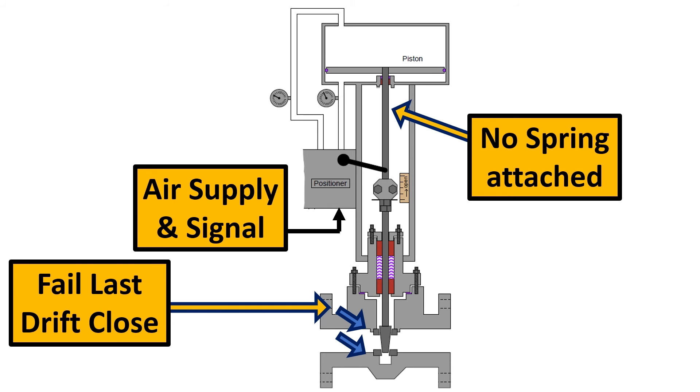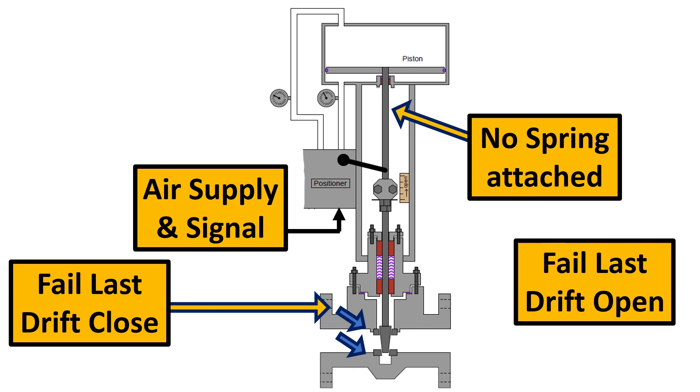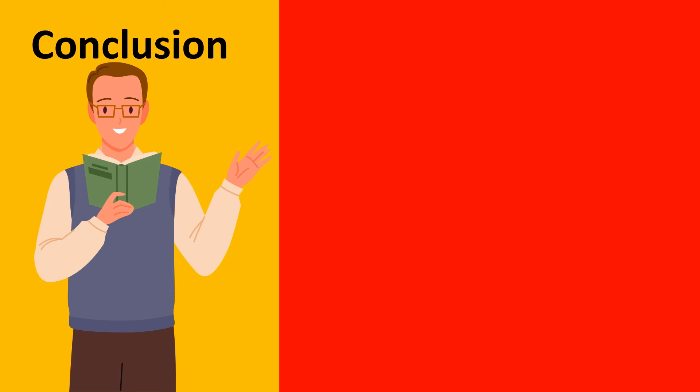So just as in, this is a hypothetical drawing but an example is basically the fluid flow is going to assist the plug to get to its failure close mode if it is a globe valve. Similarly, the fail last drift open, the fluid flow will assist the plug to get into its open position. So eventually the valve will either open which is drift open or close which is called as drift close.